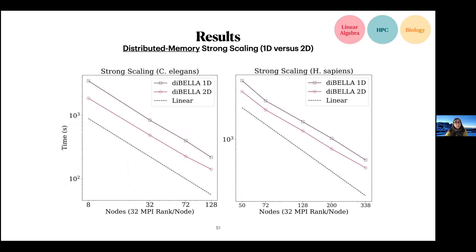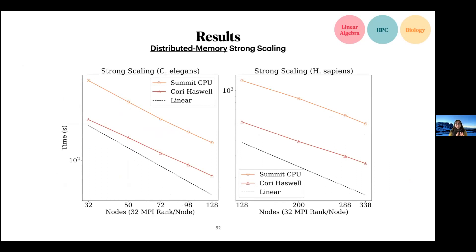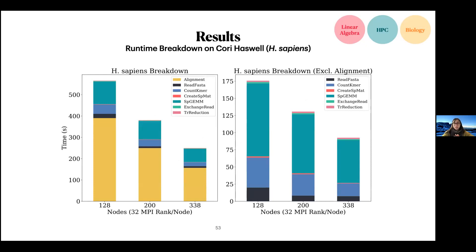For strong scaling of the 2D version on two different machines — Cori Haswell and Summit CPU — the scaling is pretty good, around 80% parallel efficiency. Looking more closely at the runtime breakdown, pairwise alignment clearly takes most of the time, which is why we are working on GPU acceleration for that part. Once the alignment is removed, the matrix multiplication during overlap detection is the most compute-intensive step, alongside k-mer counting. The transitive reduction is a small pink layer at the top that doesn't scale particularly well, but it runs fast, so that's expected.